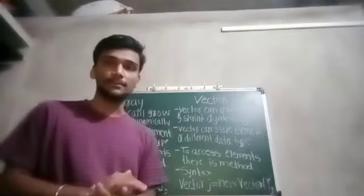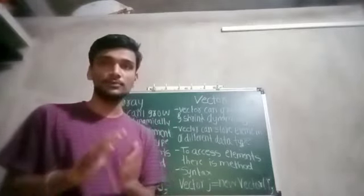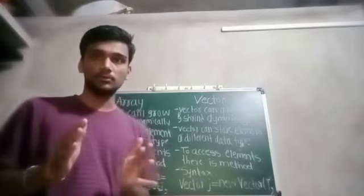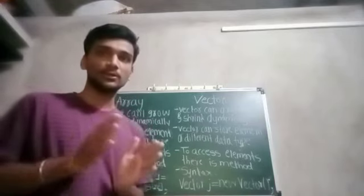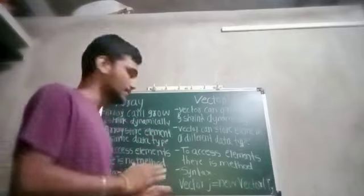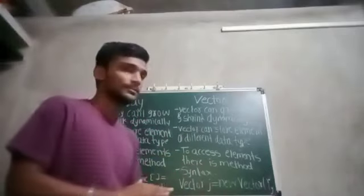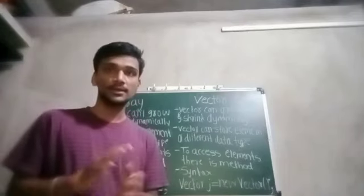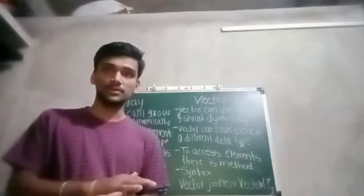Arrays store elements of the same data type. If we declare an array of int, it can hold only int data type - it can't hold double values. Vectors can store elements of different data types. This means if we declare a vector as int, it can also hold double values in it.